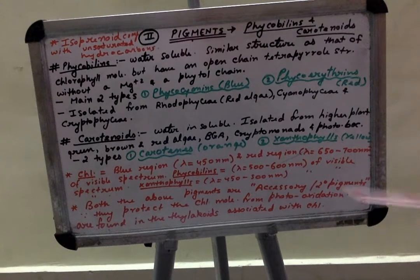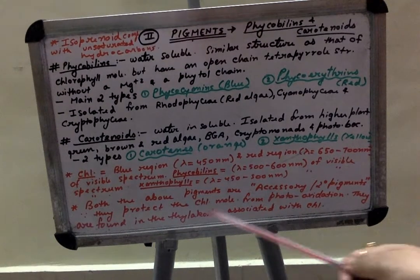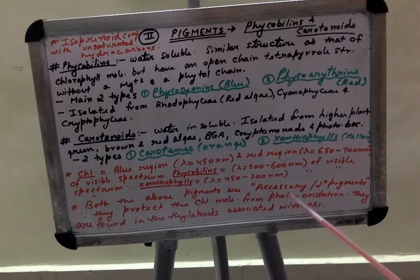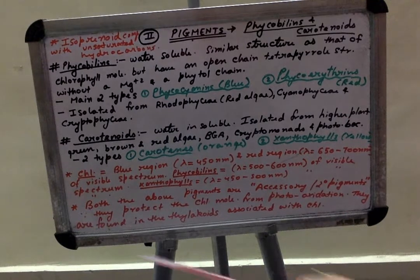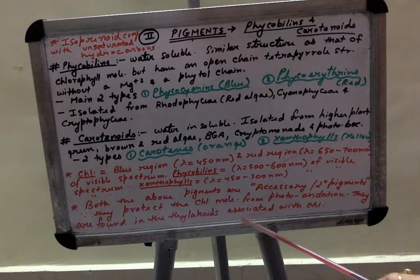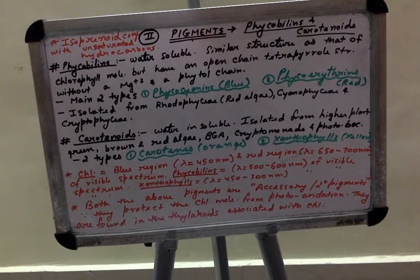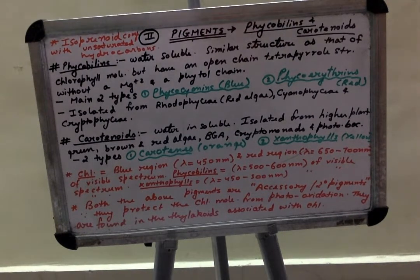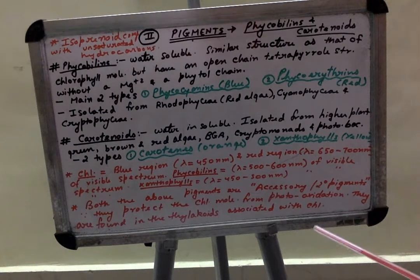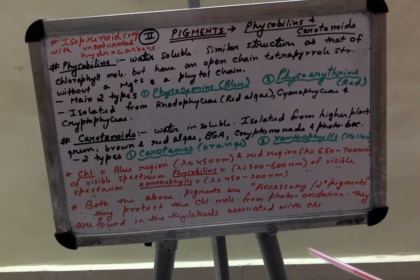Both the above pigments, that is phycobillin and carotenoids, are commonly known as accessory or secondary pigments because they protect the chlorophyll molecule from photo-oxidation. Photo-oxidation is the damage of chlorophyll pigment or the activities shown by chlorophyll pigment due to longer exposure under sunlight. Too much exposure of sunlight may damage the function and structure of chlorophyll molecule.